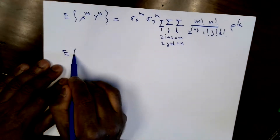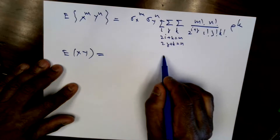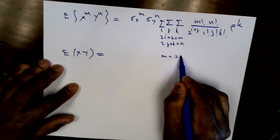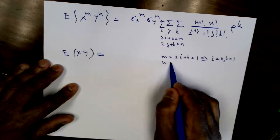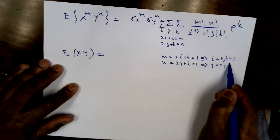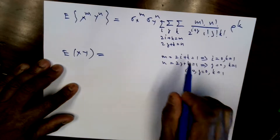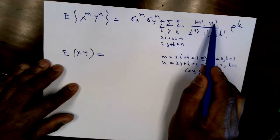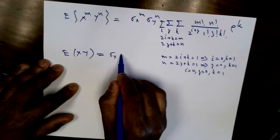Let's compute E[xy]. Here m = 1 and n = 1. From 2i + k = 1, we must have i = 0, k = 1. From 2j + k = 1, we must have j = 0, k = 1. The only solution is i = 0, j = 0, k = 1. Substituting: σx · σy · 1! · 1! · ρ^1 / (2^0 · 1 · 1 · 1) = σxσyρ. As expected.